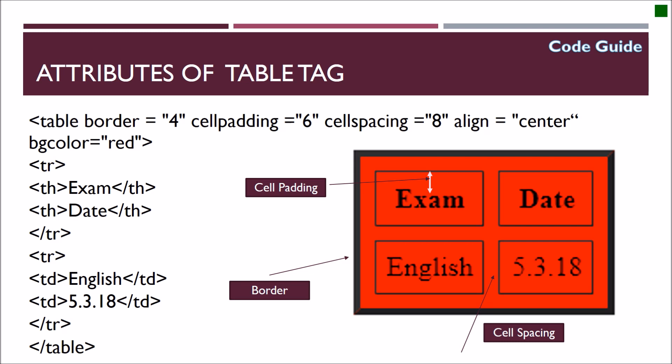Now this is attribute of table tag. So table we can specify table border. Here table border equal to 4. Border just gives the thick boundary outside the table. It does not affect the inner boundary of the inner border of the cells. Here cell padding equal to 6 pixels. You can see the distance. Cell spacing equal to 8. Distance between two cells and align equal to center and bgcolor equal to red - other attributes. This I have already explained in my video explaining the entire attributes of table and td and th. You can view that also.